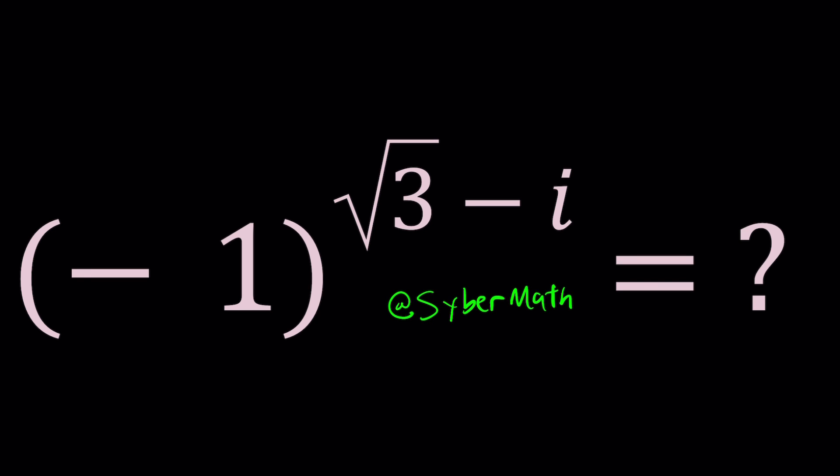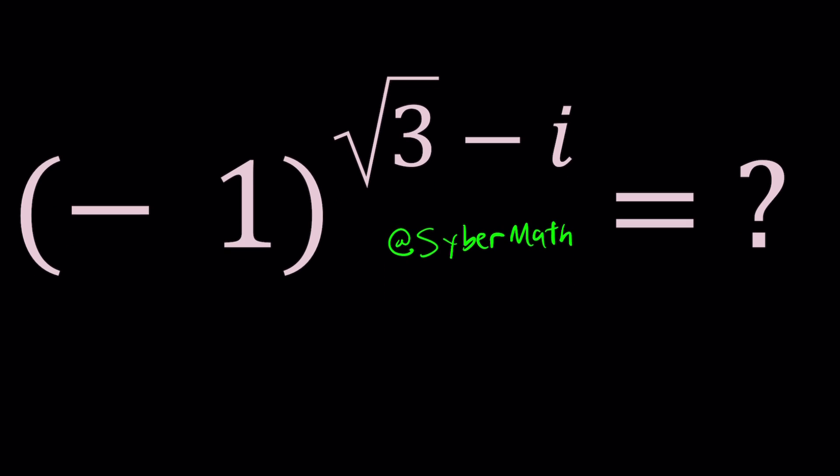Let's take a look. We have negative one at the base and root three minus i at the exponent, and now we're going to simplify this.